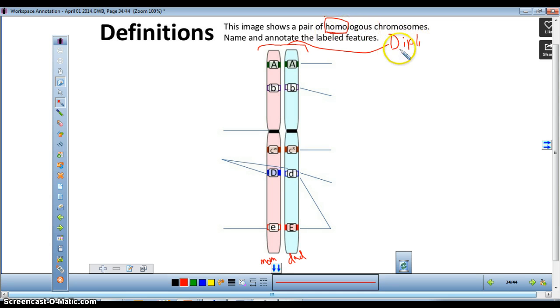Homologous chromosomes are found in diploid cells. You have two copies of each chromosome, one from your mom, one from your dad.